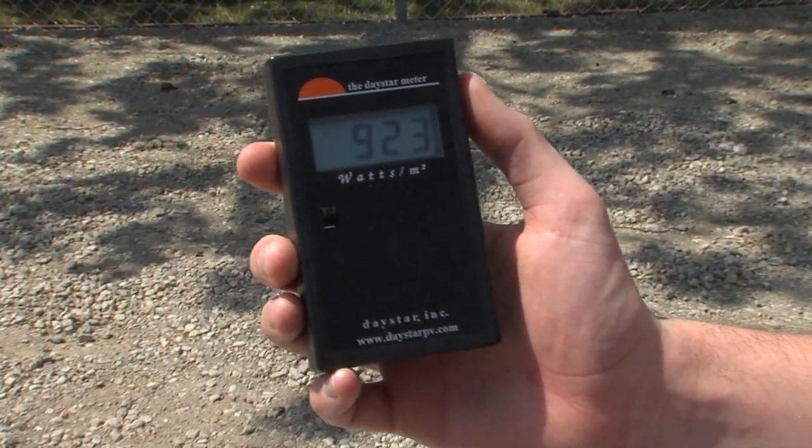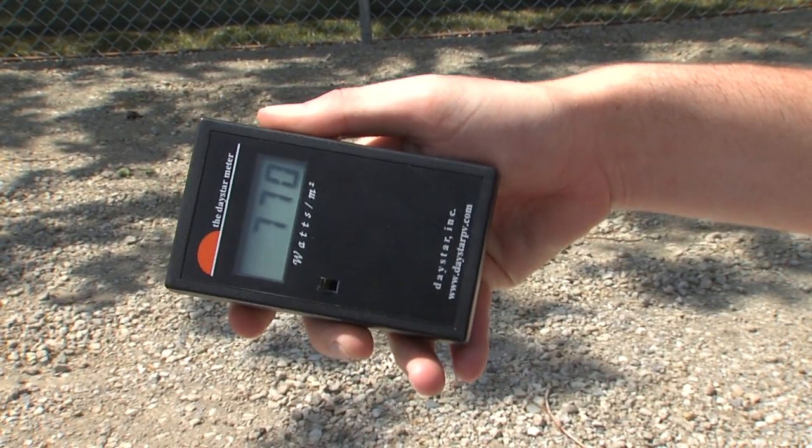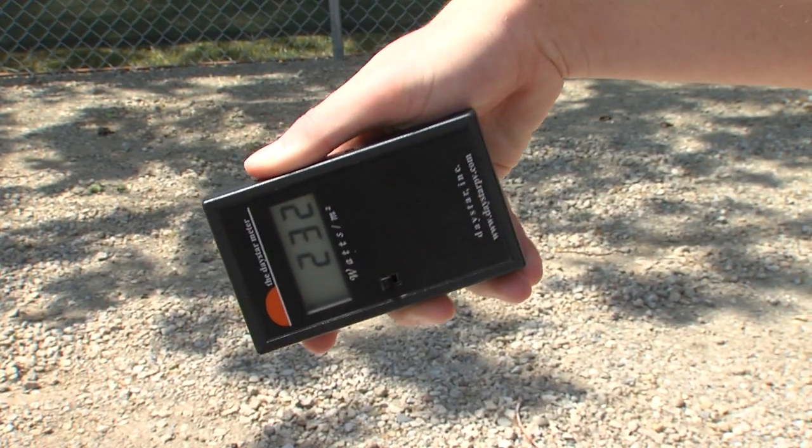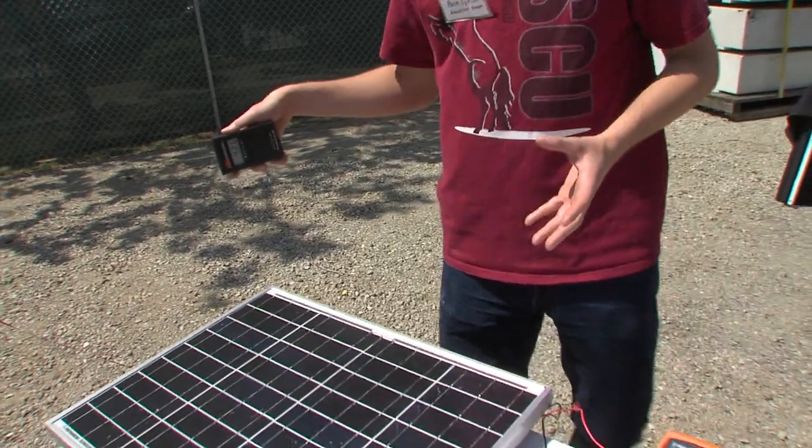up and we're getting about a thousand watts per meter squared. But as I tilt it, it starts to come back down. That's just because there's still radiation coming off of the ground, off of the balloons, everything that's around here but not directly from the sun.